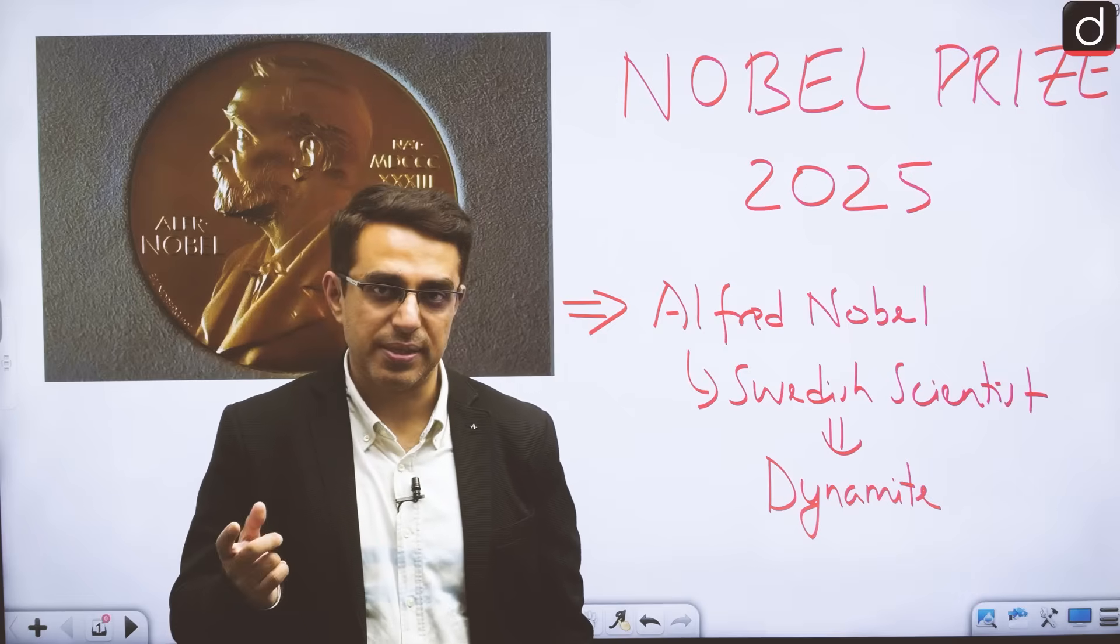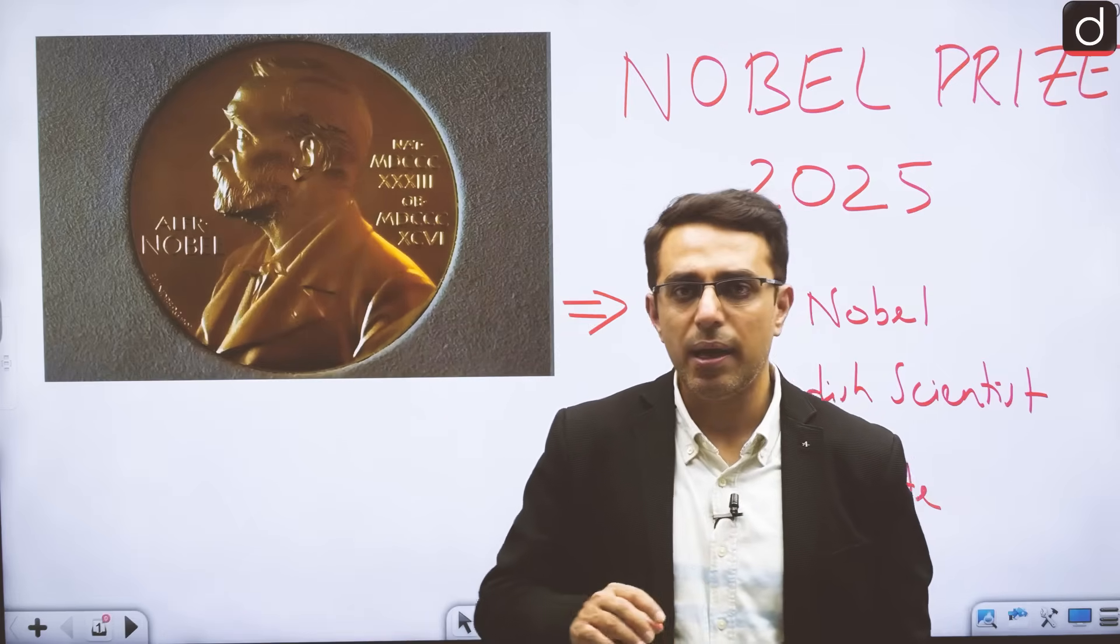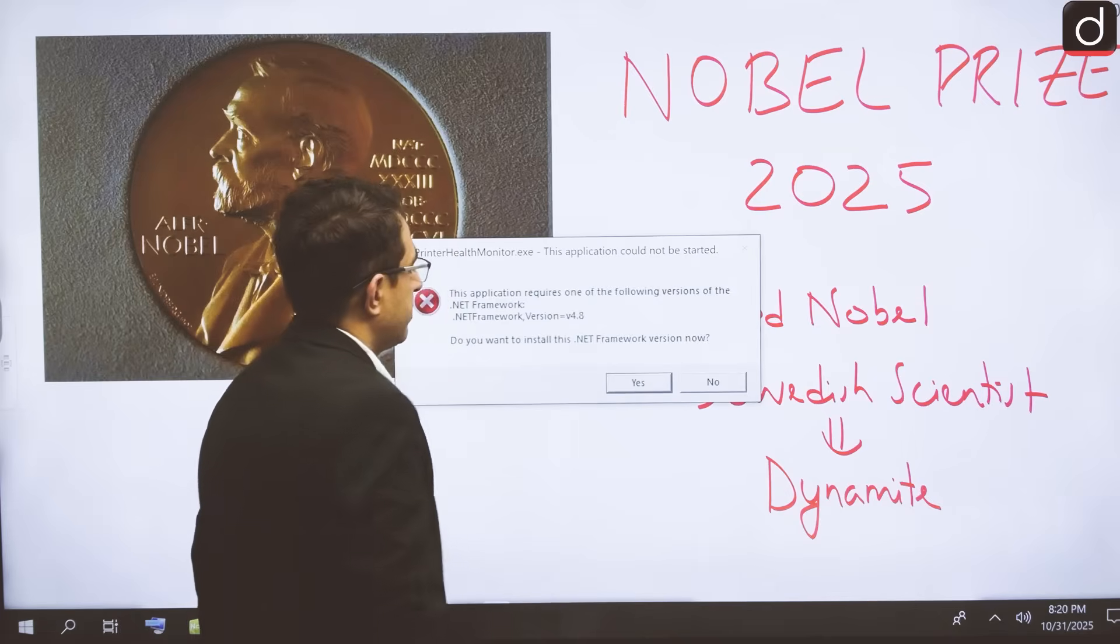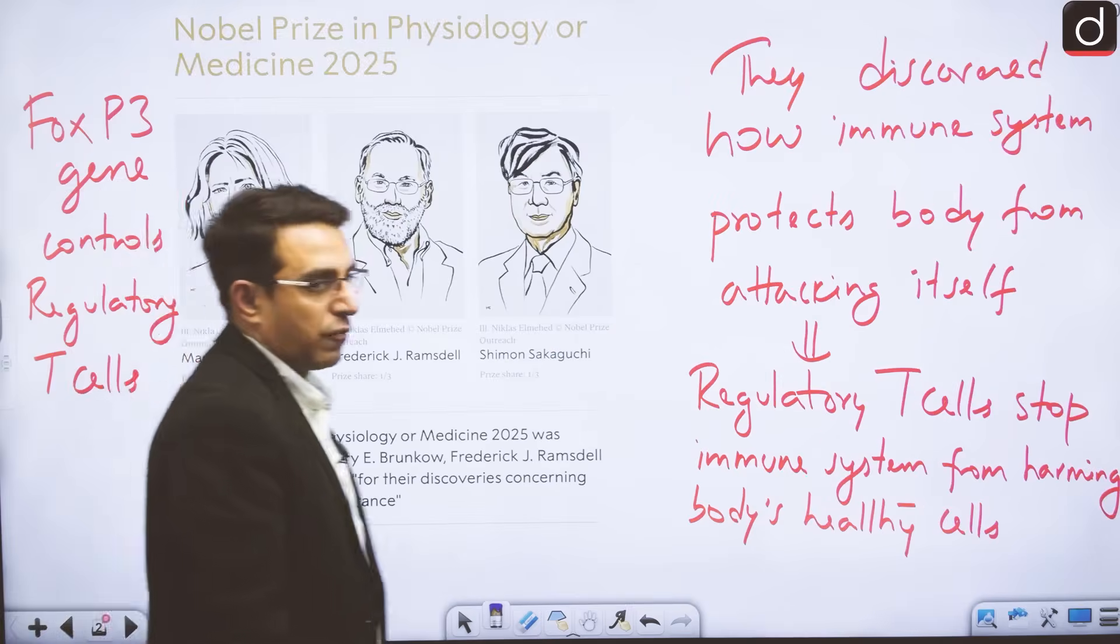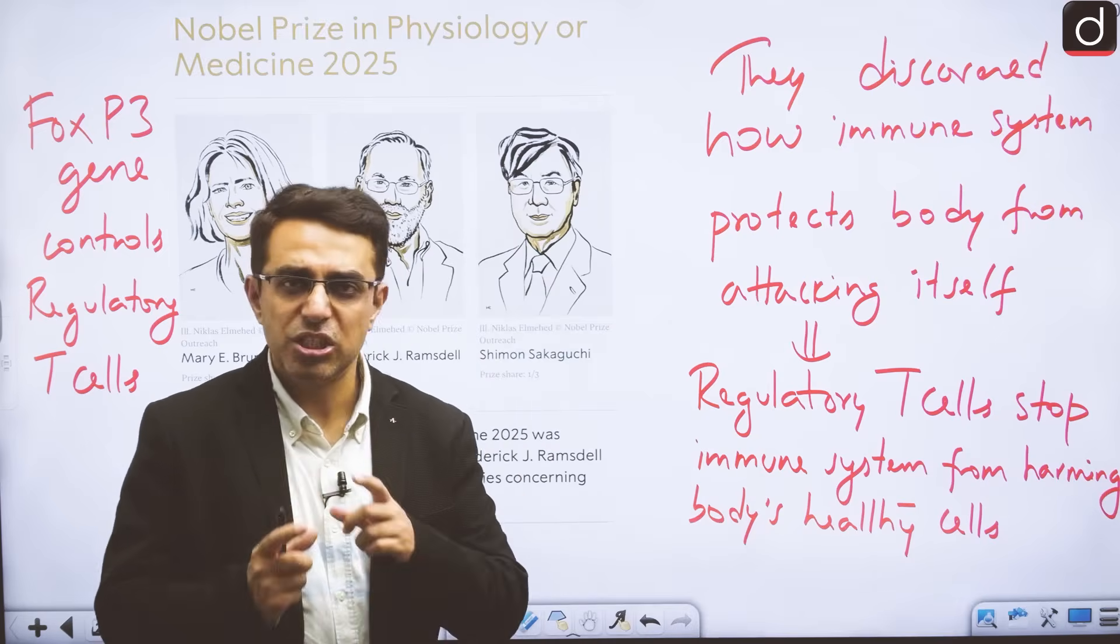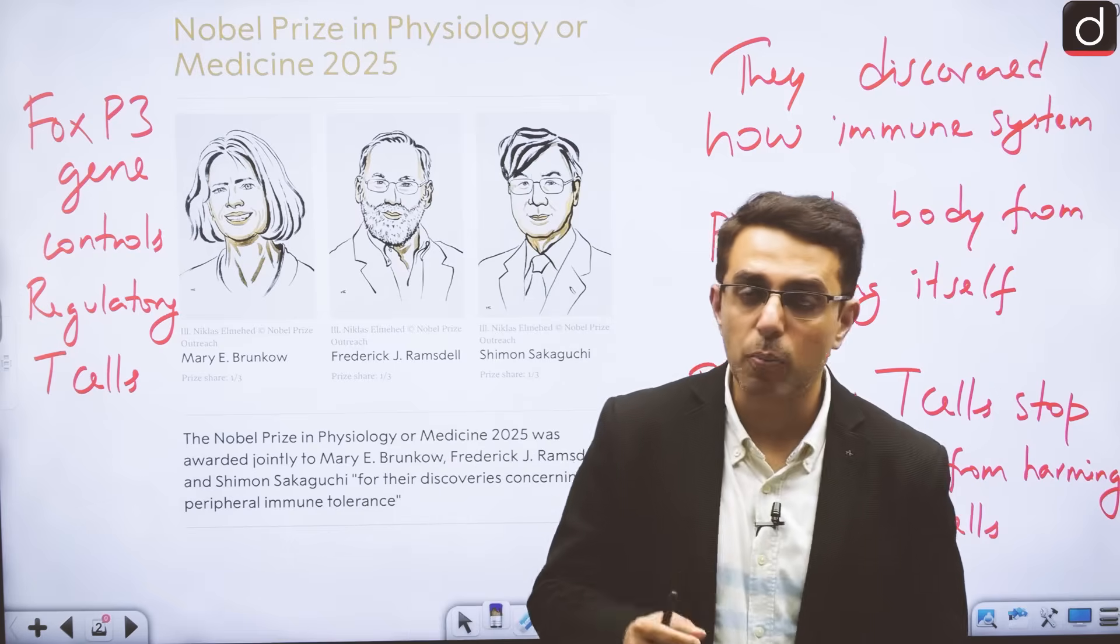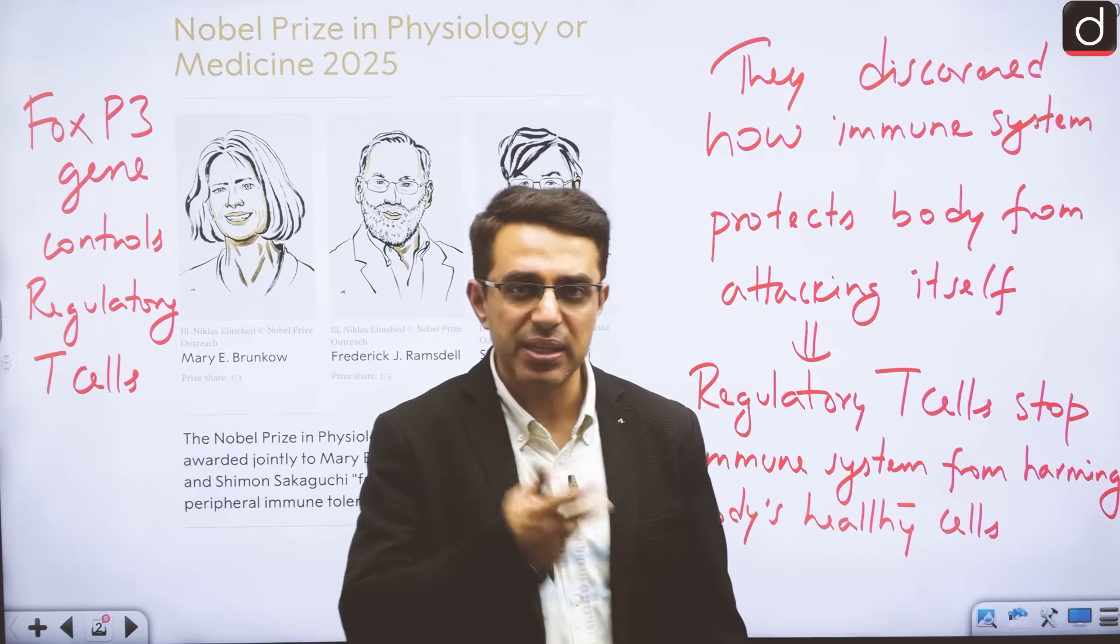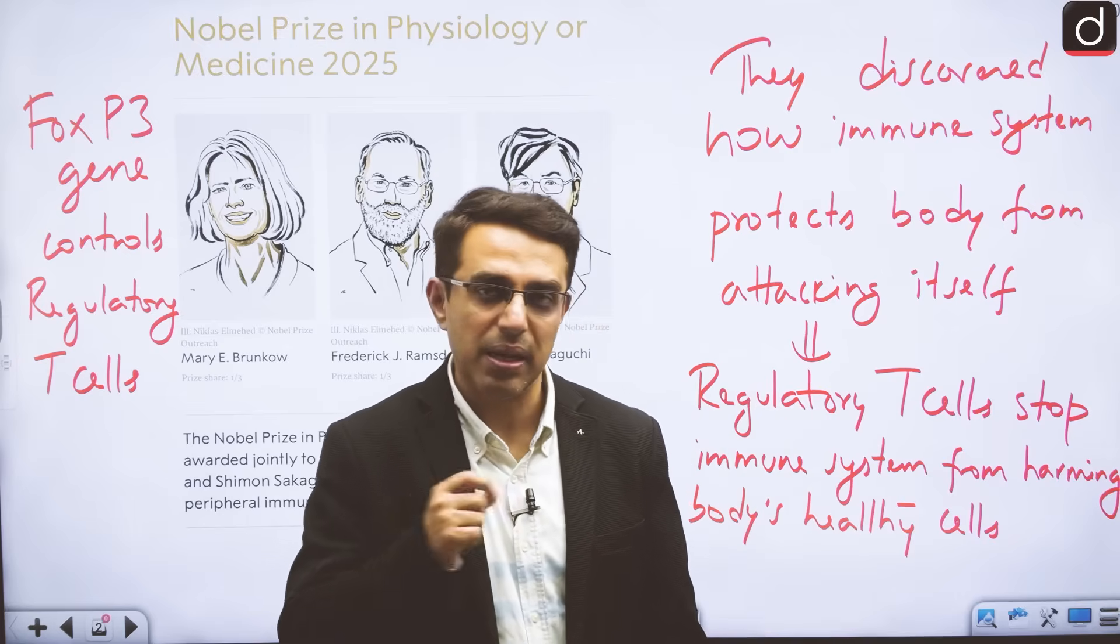That is the economics prize. Otherwise physics, chemistry, medicine, literature and peace - these were the original five categories. Later on from 1969 onwards, the category of economic sciences has also been added. Let us look at the Nobel Prize winners of 2025. Generally in exams, questions are asked about what the prize was given for. Very rarely we will be asked about the name of scientists, but it also depends. For example, Nobel Peace Prize - the name of the individual or organization will be asked. But for Nobel Prize in physics, chemistry and medicine, mostly it is asked for which area of research it was given.